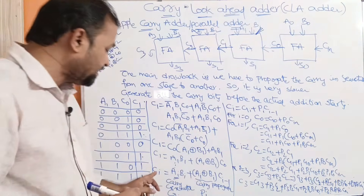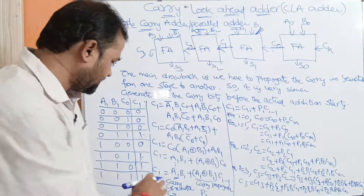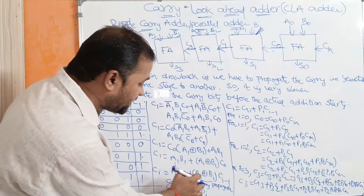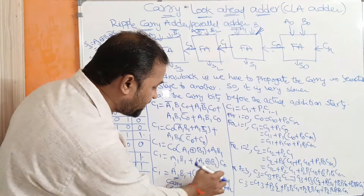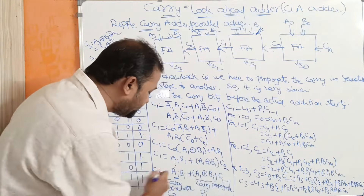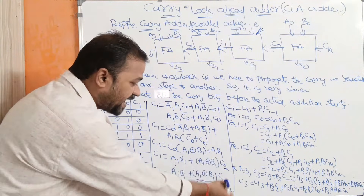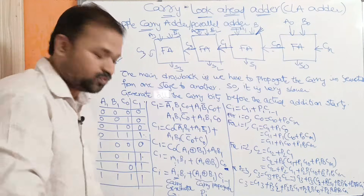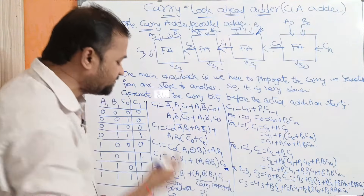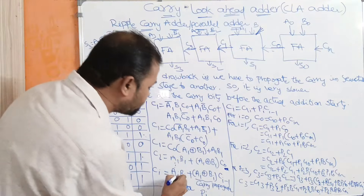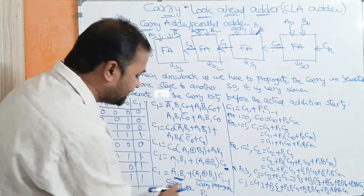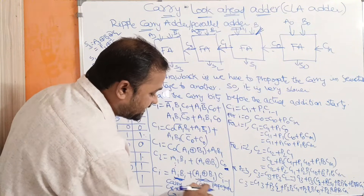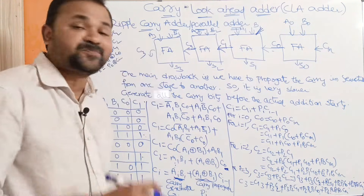Generalizing to the ith term: Ci = Ai·Bi + (Ai XOR Bi)·Ci-1. The term Ai·Bi is called the carry generator, and the term (Ai XOR Bi) is called the carry propagator.